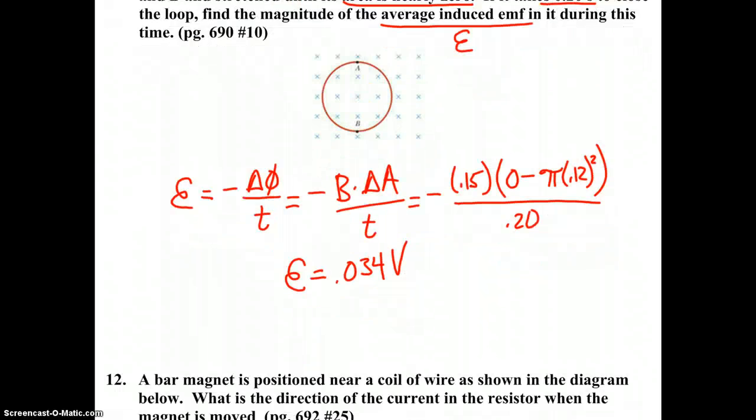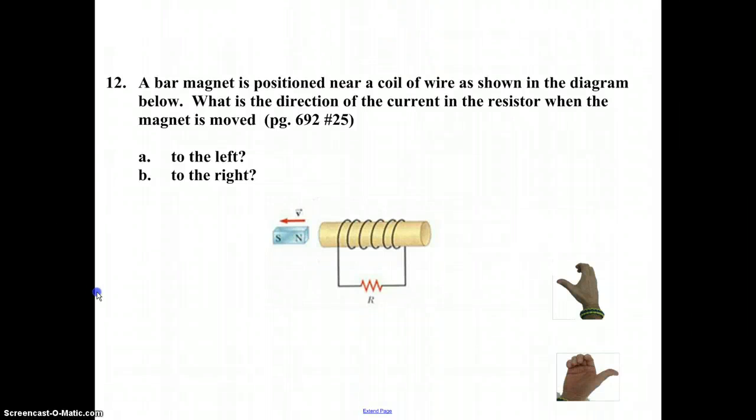We now change to number 12, which is a very nice problem using Lenz's law. We have a bar magnet positioned near a coil of wire, as shown in the diagram below. What is the direction of the current in the resistor when the magnet is moved A to the left, which is what is pictured here, and then we'll talk about B when it's moved to the right.